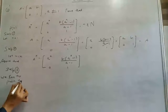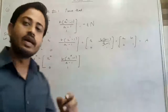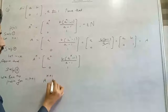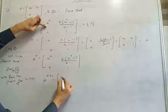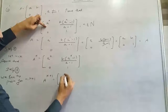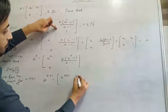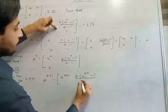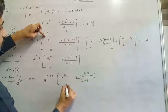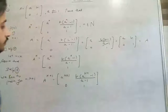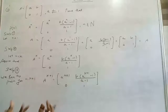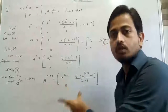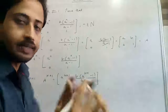Step 3: we have to prove for n equal to k plus 1. Substituting n equal to k plus 1, the result should be A^(k+1), B(A^(k+1) minus 1)/(A minus 1), 0, 1. We have to prove left hand side equals right hand side, so we take the left hand side and prove the right hand side.